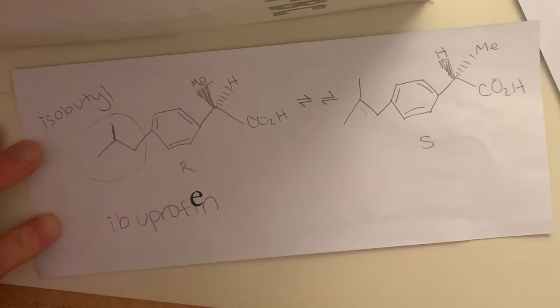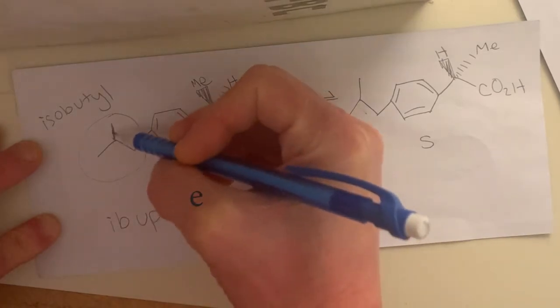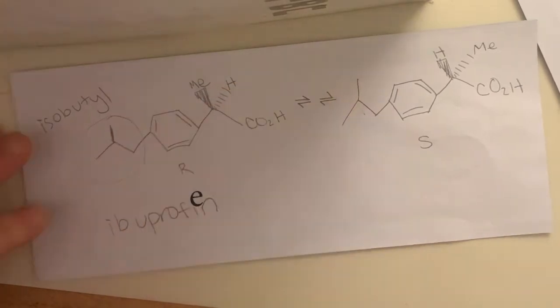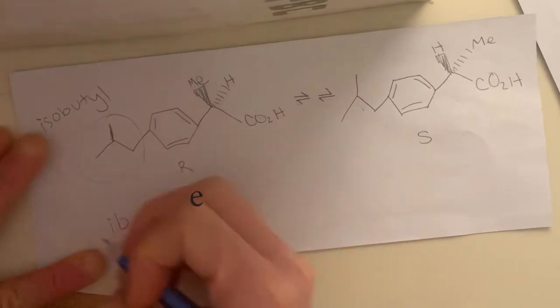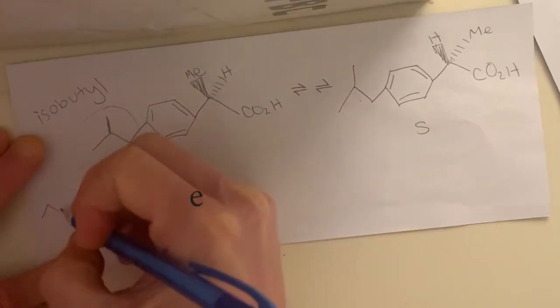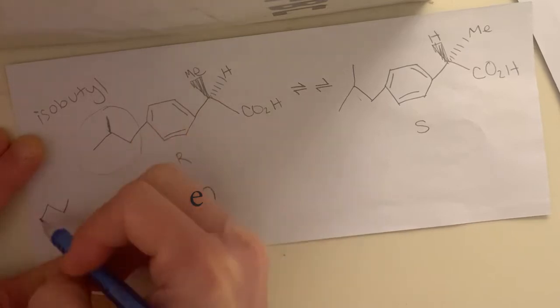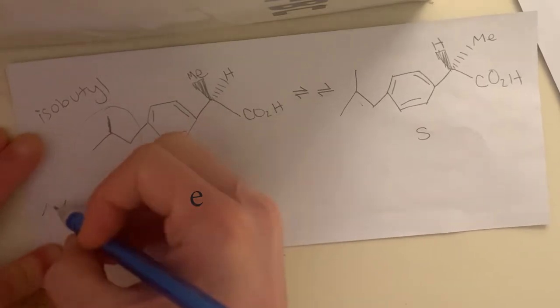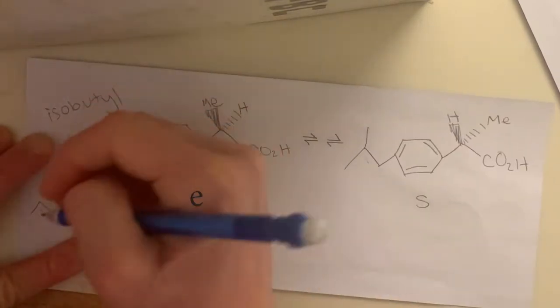And then the iso part is telling us that it's kind of like at the end, on this branch, like this. So if we had just butyl, like n-butyl, so normal butyl, it would be like that. But instead, we have isobutyl, so it's like this.